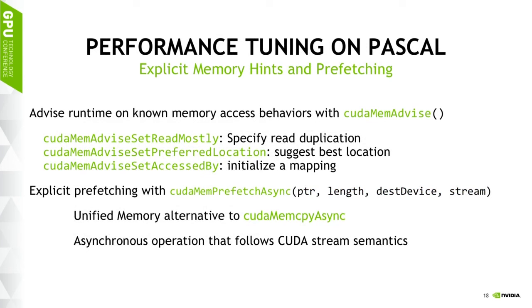The other new unified memory feature in CUDA 8 is tuning APIs — explicit memory hints and prefetching to optimize memory access in your unified memory code. This effectively gives you the ability to optimize certain parts of your code as if you were doing explicit memory copies and allocations, while still benefiting from all the convenience of unified memory everywhere you don't need to be explicit.